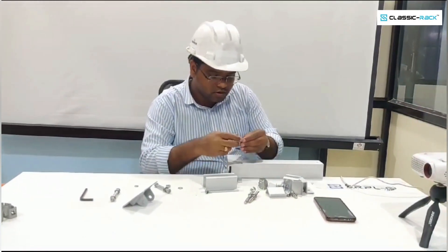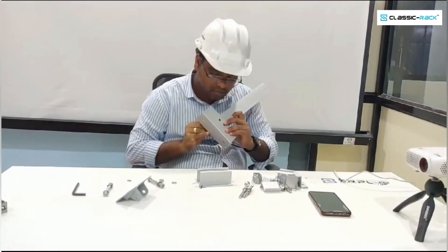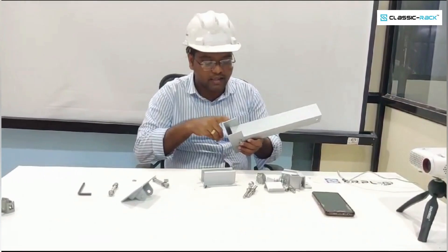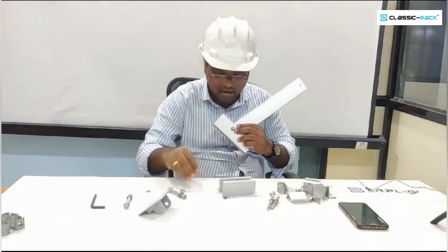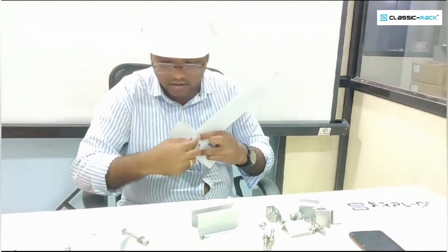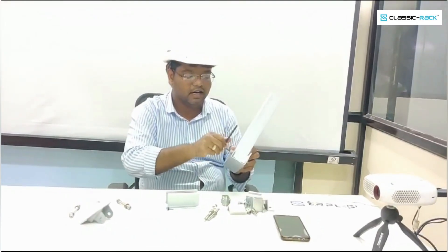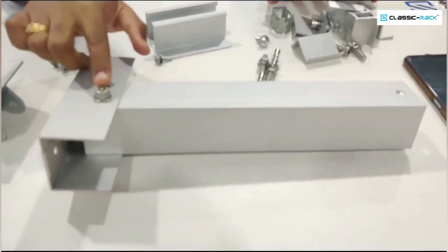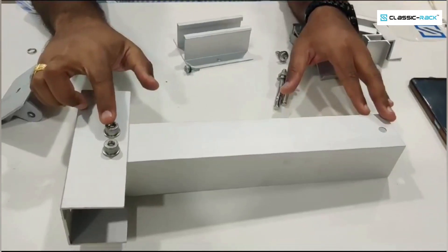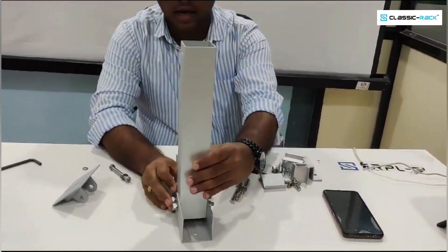So that your installation will be fast. There is a plain washer at this and this side and directly fasten it. Take Allen key and tighten it in this way. Similarly at this particular position, we need to do this 70mm assembly at this particular hole also and fix this.